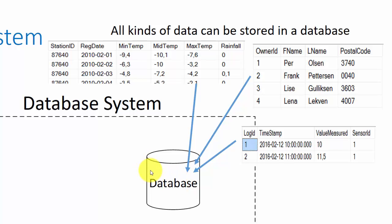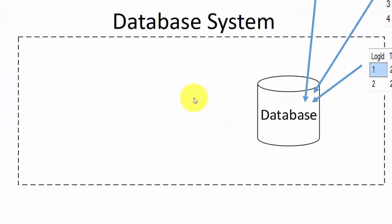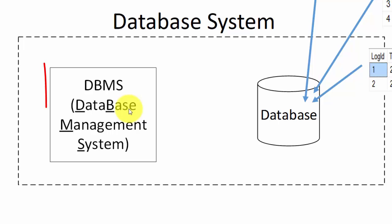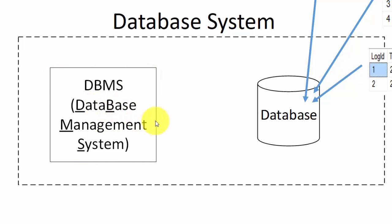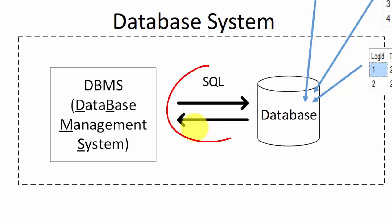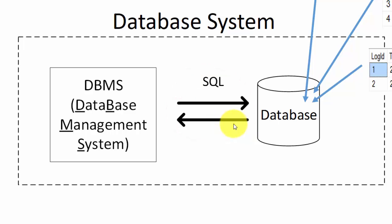To communicate with a database we use a database management system. The database management system will communicate with a database through a language called SQL, or Structured Query Language. SQL consists of a set of commands used to store data, retrieve data, and do other things with data.